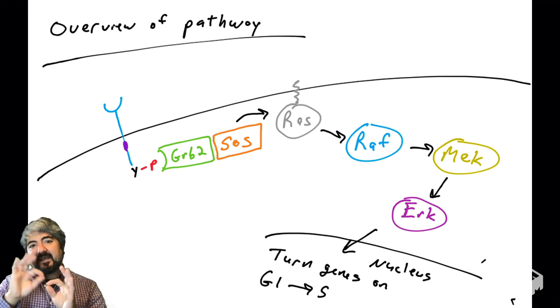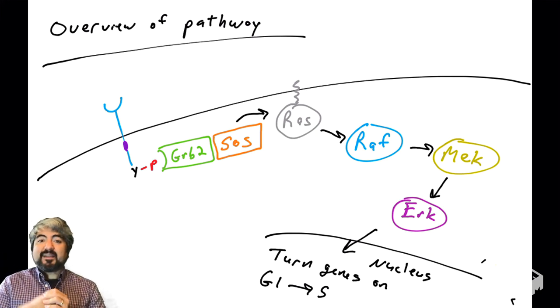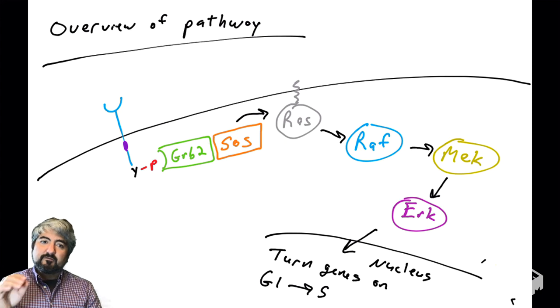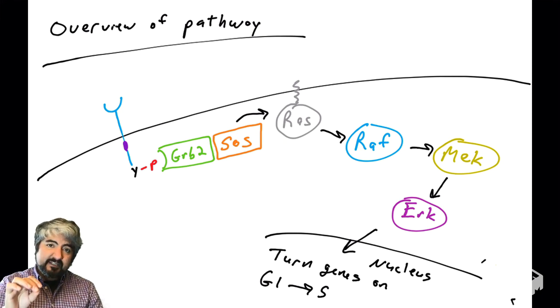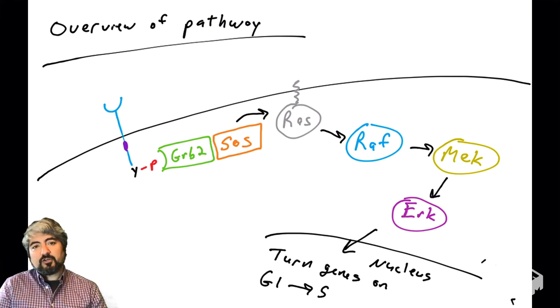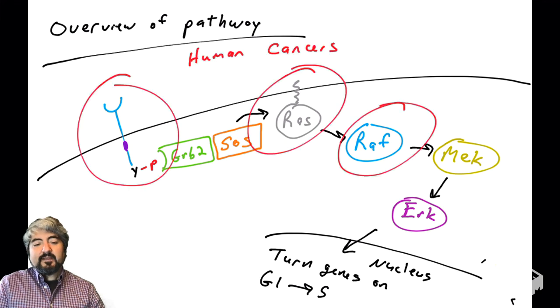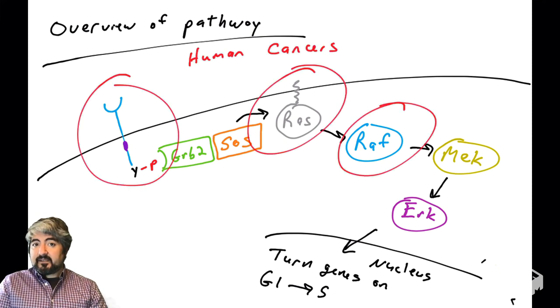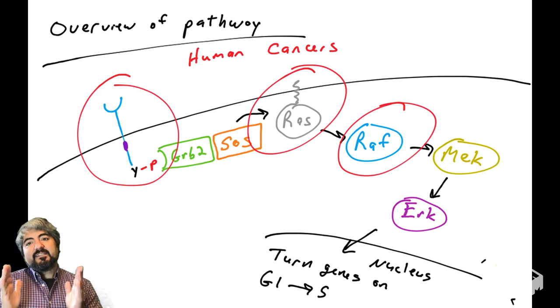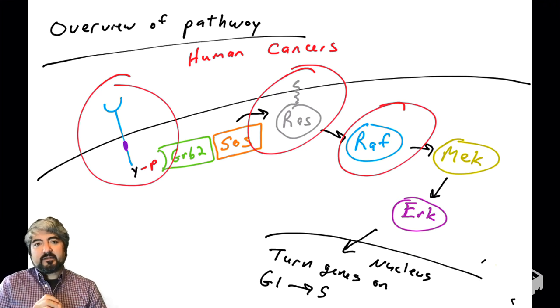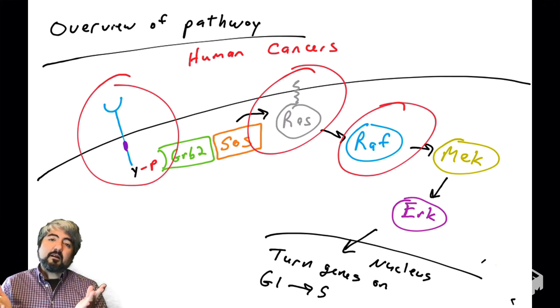And once we take this apart, you can then add all sorts of regulation into this pathway. But we're going to learn this regulation going from receptor tyrosine kinases all the way down to ERK and into the nucleus. And again, it's important to understand this pathway because it is commonly dysregulated in human cancers.